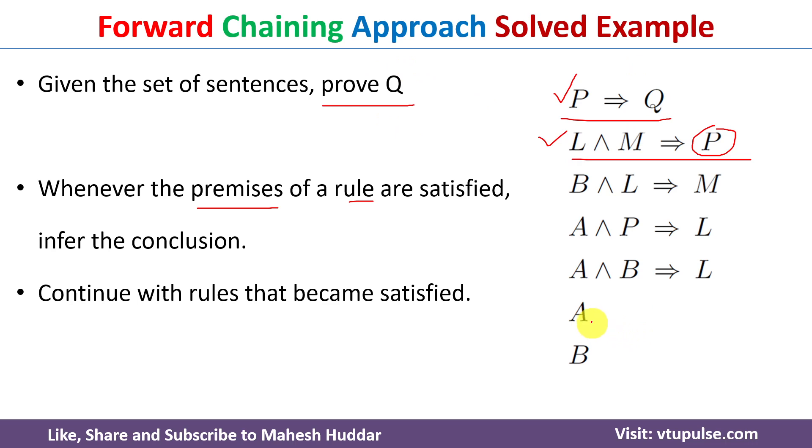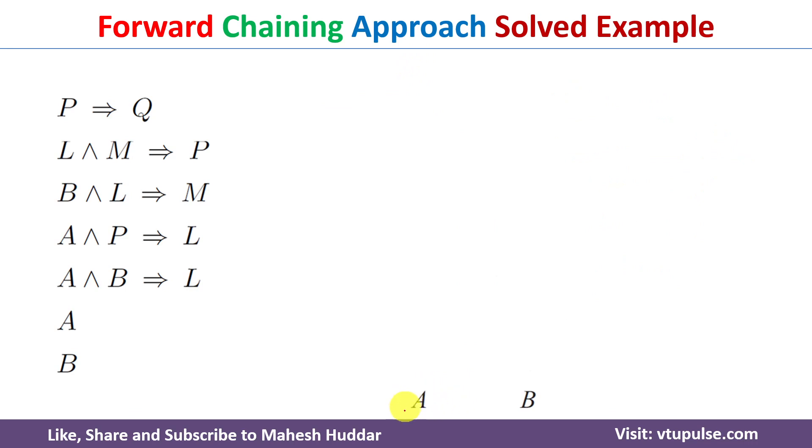In this case, if you look at here, A and B are the individual literals. We will start from here and we will go on inferring the different conclusions until we reach this Q here. First we will consider A and B, because both of them are true, that is what is known to us.